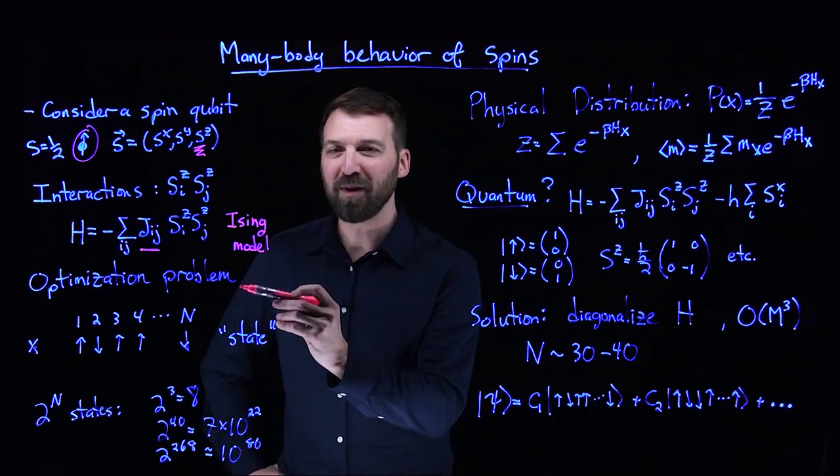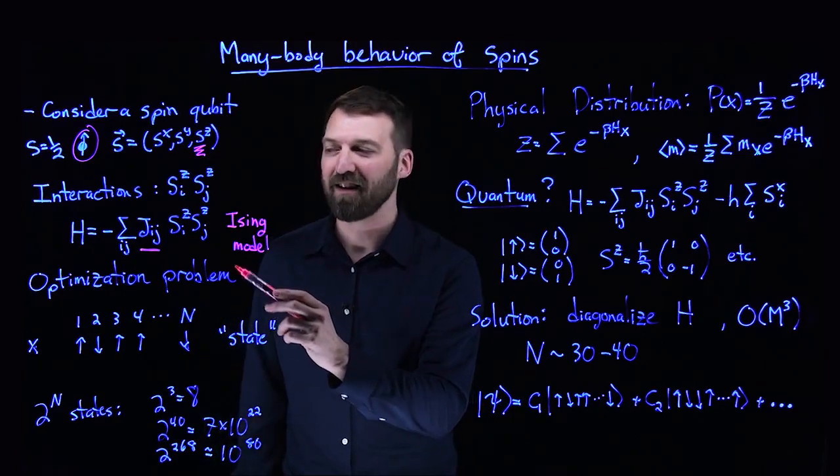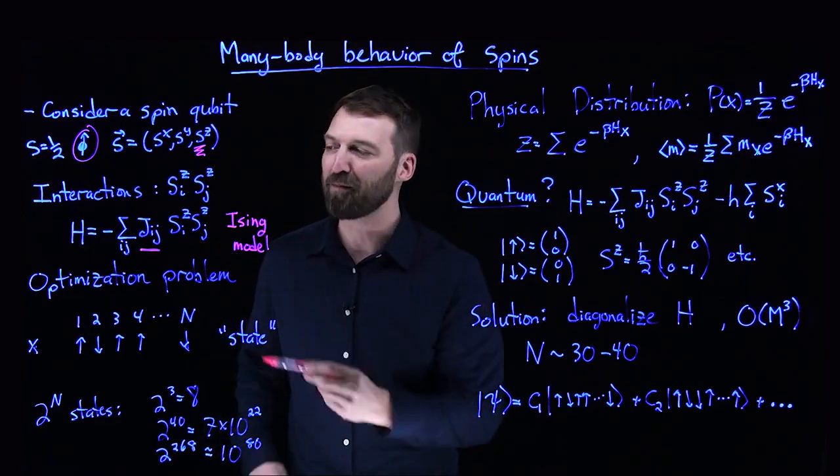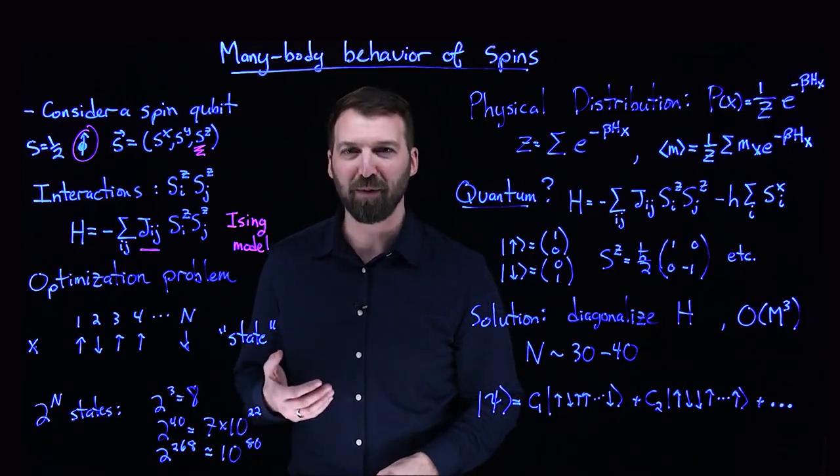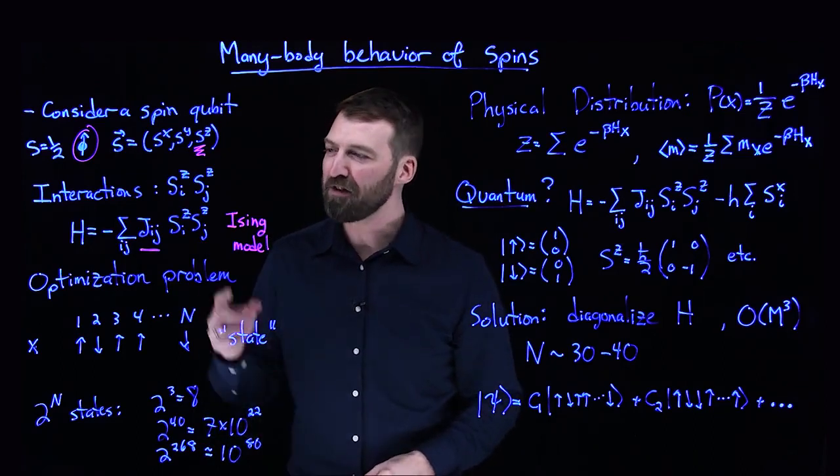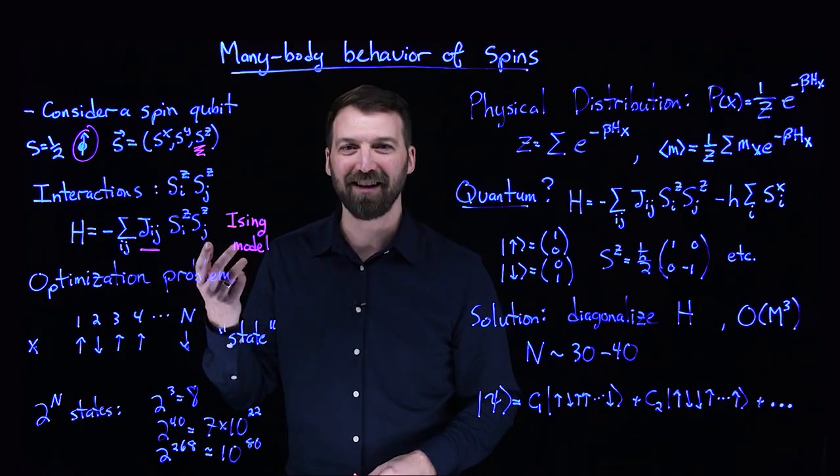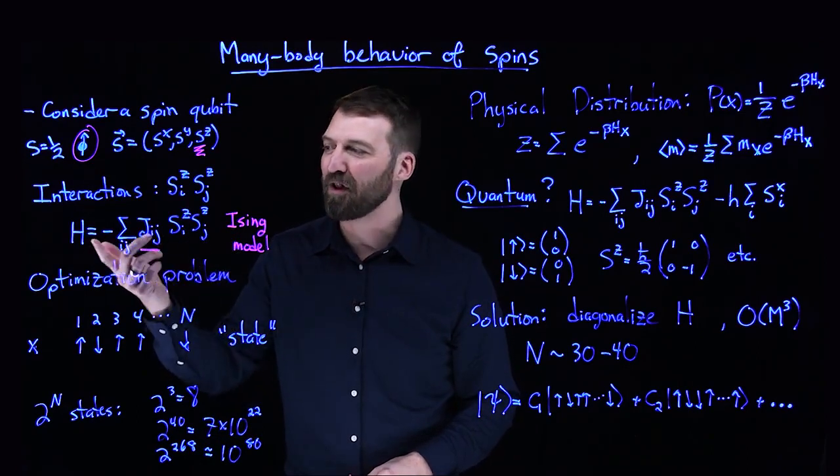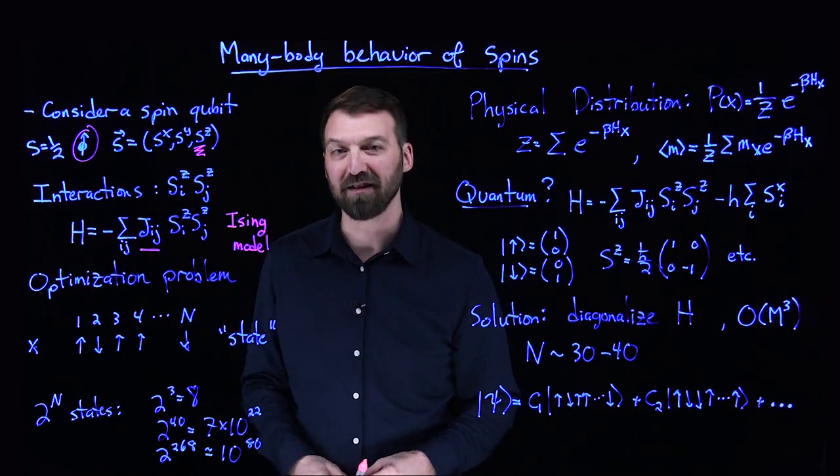You may be looking for, for example, the lowest energy state of this system governed by this equation, and that would be an optimization procedure. You're looking for the spin configurations of the N-body spins that give you the lowest energy as dictated by this Hamiltonian.